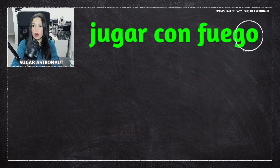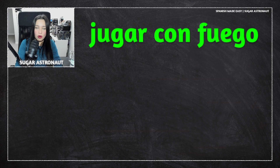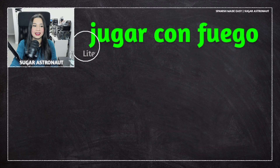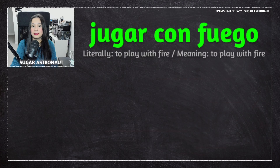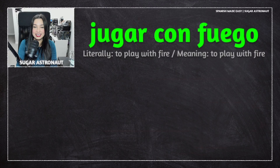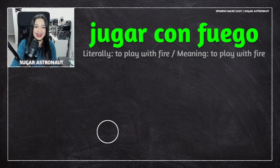Jugar con fuego means to play with fire. Con means with, and fuego means fire. The literal translation is to play with fire, and it's similar to the English expression. So this is a very literal phrase. Someone is doing something dangerous, just like playing with fire — that's dangerous, literally and figuratively.